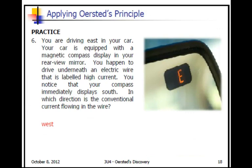Here's a question that says you're driving east in your car, and your car is equipped with a magnetic compass display in your rear view mirror. You happen to drive underneath an electrical wire labeled high current. You notice that your compass immediately displays south. In which direction is the conventional current flowing in the wire? If you were traveling east and then you travel underneath this tunnel and it starts to show your direction as south, that means there must be a current flow going to the west, using the right-hand rule to show that to have a south output.